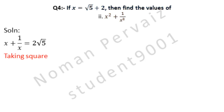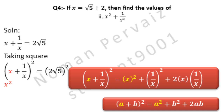Taking square — we have taken square on both sides of the above equation, as indicated in blue color, and the square is shown in red color. Here we are going to apply the formula: (a + b)² = a² + b² + 2ab. We write a squared as x squared, and b squared as 1 over x squared, since 1 squared is 1 and x squared remains x squared.